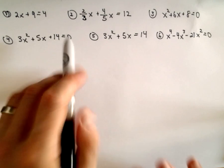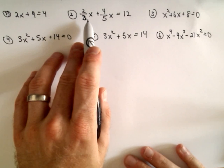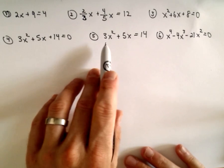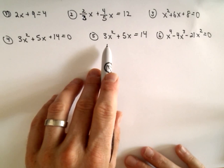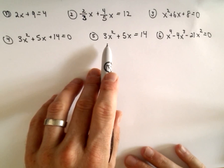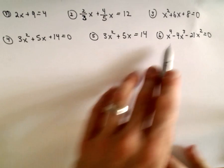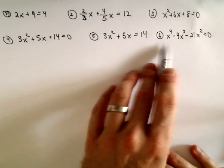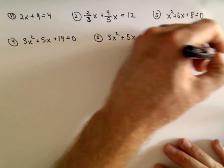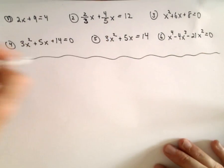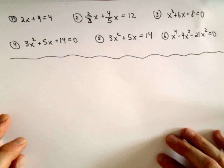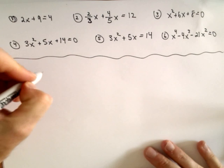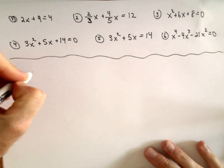We've got a couple of linear equations in problems 1 and 2. Problems 3, 4, and 5 are quadratic equations, and then we've got a slightly higher degree polynomial. So nothing too crazy — hopefully none of it's too crazy — but again, it's easy to forget these things.